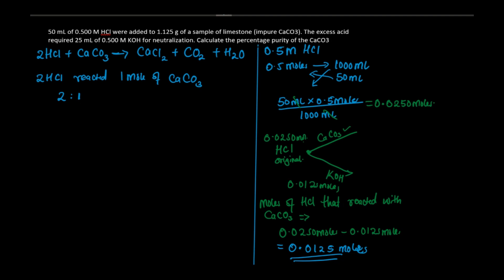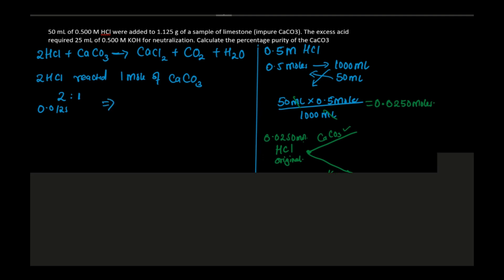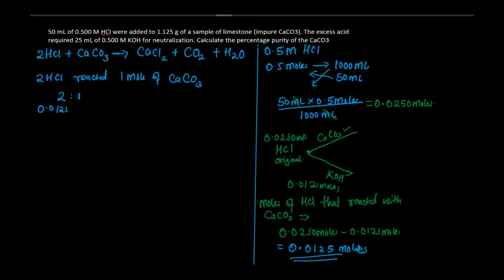Every two moles of HCl react with one mole of calcium carbonate. If we have 0.0125 moles of HCl, cross-multiplying: 0.0125 × 1/2 gives 0.0063 moles of calcium carbonate. This is the number of moles of calcium carbonate that reacted with hydrochloric acid.